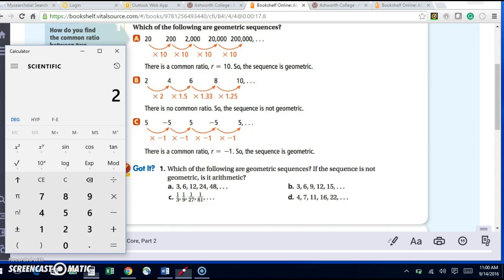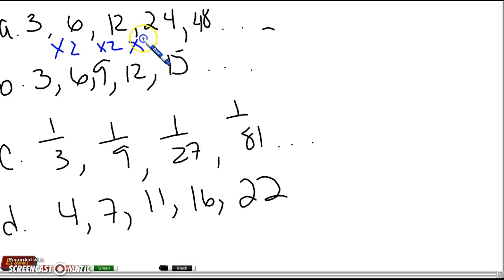And you can probably easily see that it is each time, but we'll keep going. 24 divided by 12, I get 2 again. And then 48 divided by 24 is 2. So my R is 2. It is a geometric sequence.